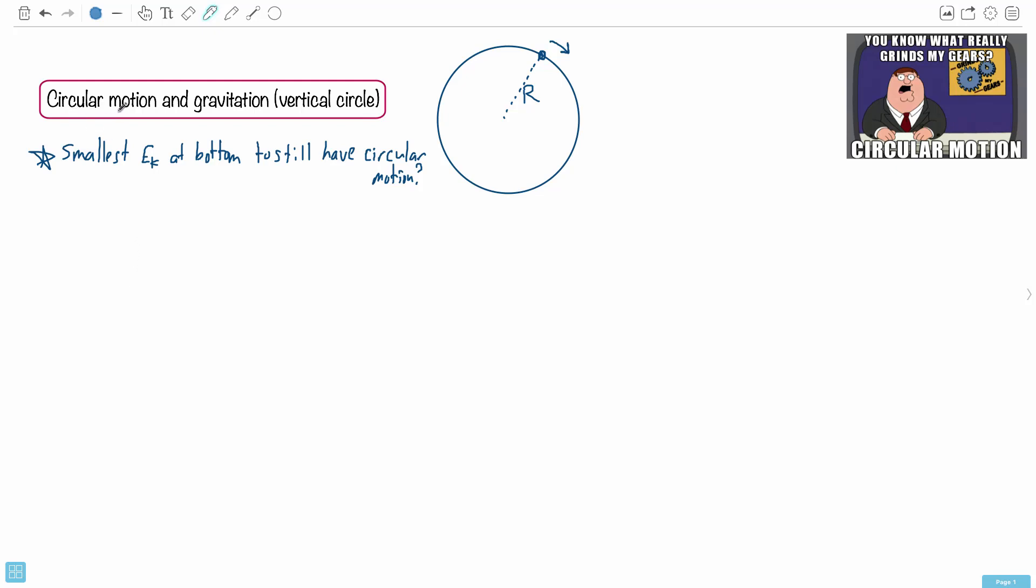All right, this question is about circular motion and gravitation. Well, I mean, that's the whole unit. It's called circular motion and gravitation, and it's about a vertical circle. Oh boy, buckle up. This is an interesting one.